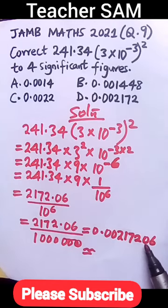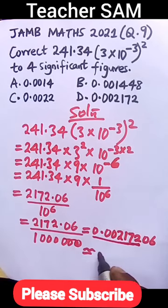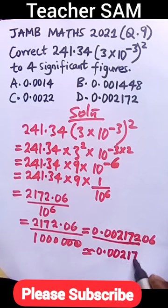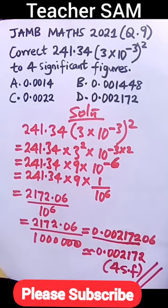In this case, it's 0, so we round down to 0. I'll be left with 0.002172 to four significant figures. This is what was required of us by this question.